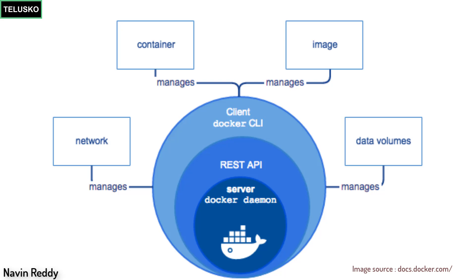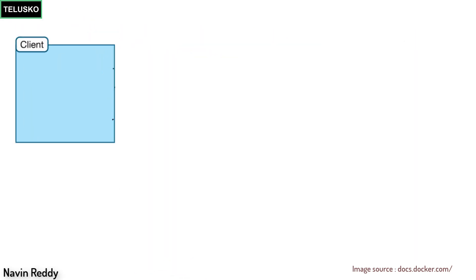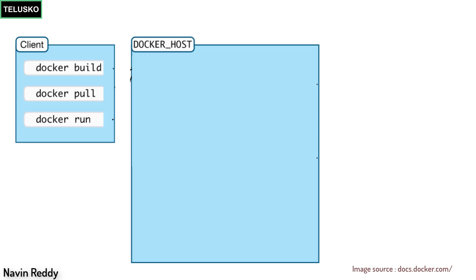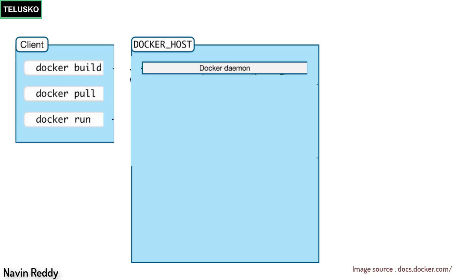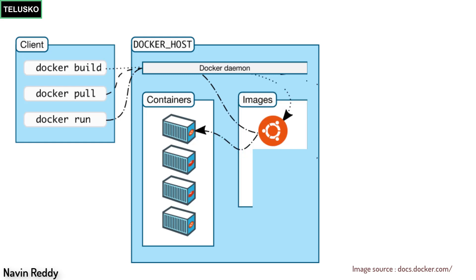If you focus on the actual architecture of Docker, it looks something like this. We have a client — this client will pass commands, any command accepted by Docker. Then we have a Docker host. Docker host has this amazing service called Docker daemon. This daemon is responsible to accept the commands from the client and perform the operation — operations like managing your containers and managing the images. Now if you really focus on Docker daemon, the question is: can it really create containers for you? And the answer is no.